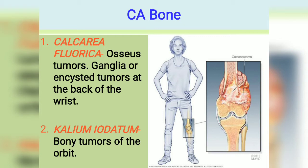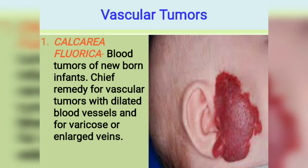Moving towards vascular tumors, the medicine is again Calcarea Fluorica — blood tumors of newborn infants. You can see the image on the right side; it is a type of hemangioma. It is the chief remedy for vascular tumors with dilated blood vessels, and for varicose or enlarged veins — blood tumors.